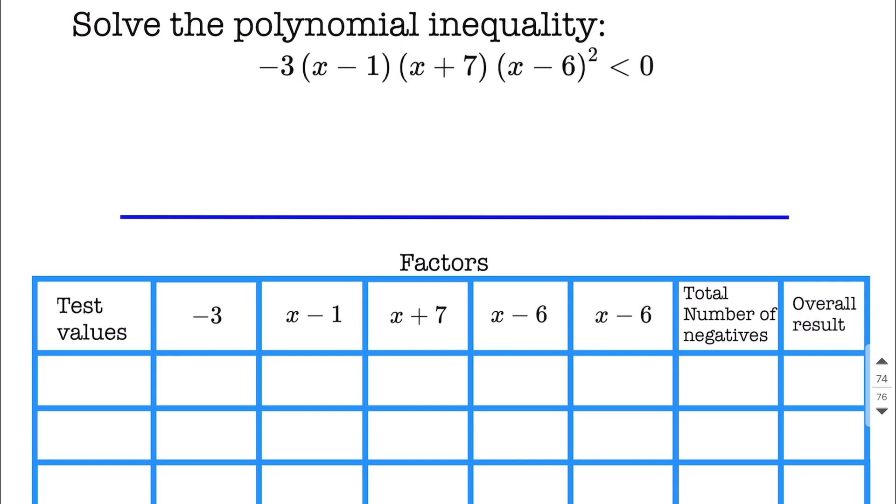Okay, let's get to work solving this polynomial inequality. It's already factored for us, which is very nice. The first thing I'm going to do is figure out when each one of these factors is going to equal zero. Now the first factor here, the negative 3, is never going to equal zero because it doesn't have an x with it.